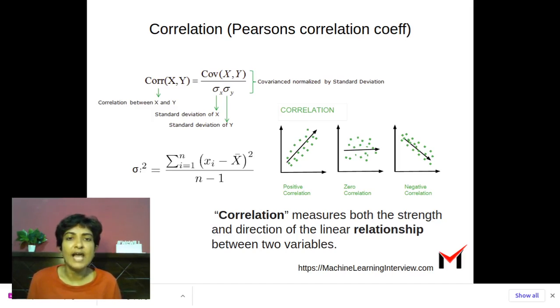So if we have a positive correlation between two random variables, this is how it might look. When one of the variables is increasing, we see that the other variable also increases. So we see the points lie along a straight line with a positive slope.